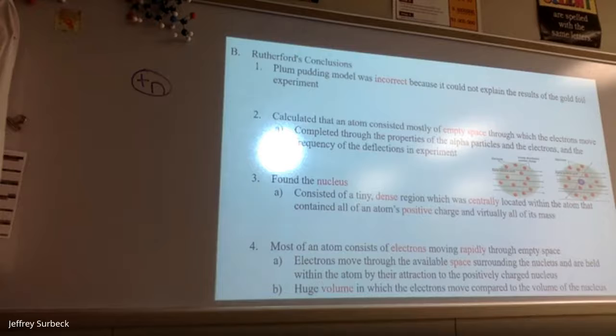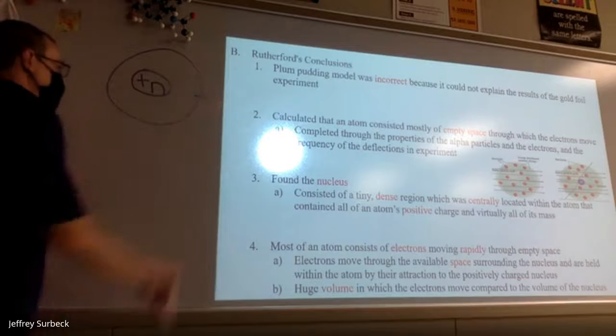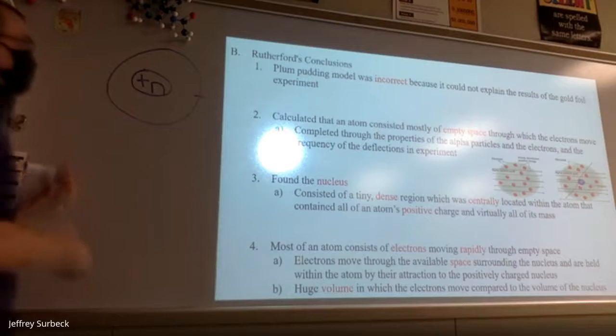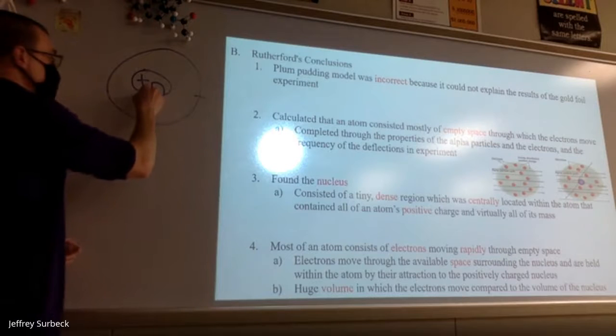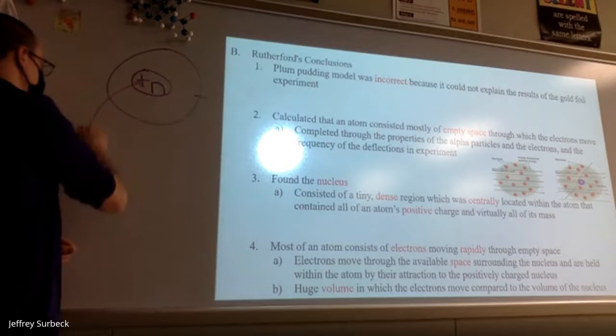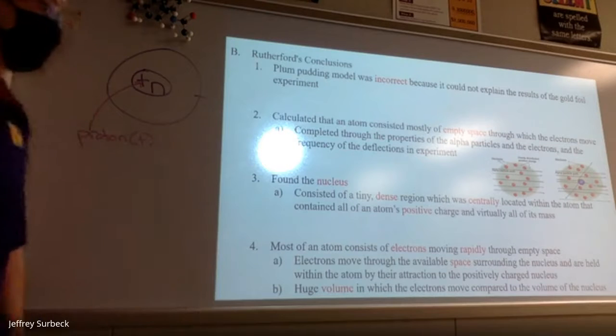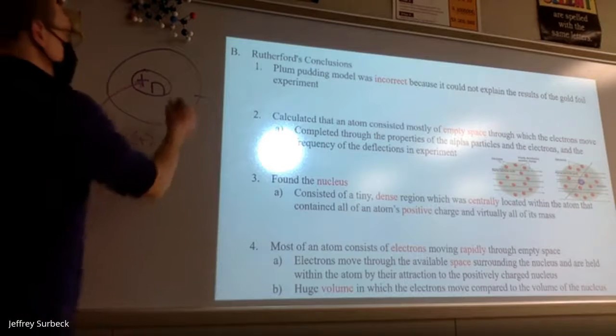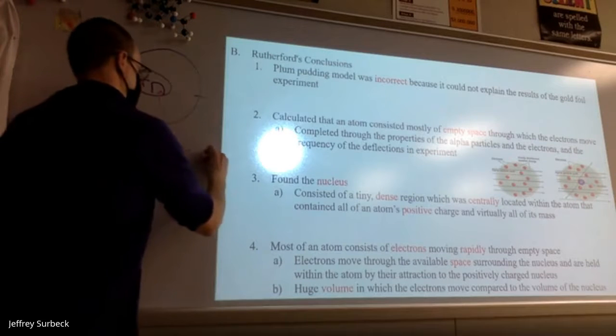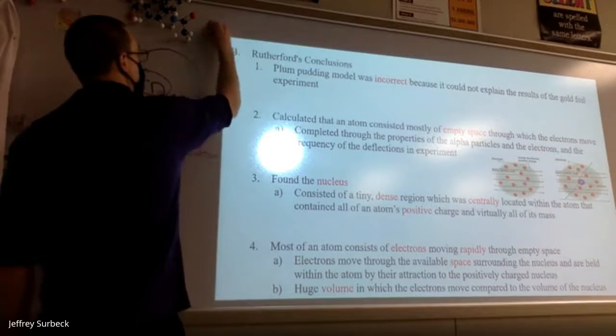So what happens here is Rutherford develops that next model of the atom where the plus sign stands for our positive proton. Our N is our neutron, which we'll get to here in a second. And then this is located in the center. And around the outside is those electrons. So again, the center, we call this the nucleus. And then within the nucleus, you have a proton, which is that positive charge. And that's what Rutherford found. He said, hey, it's all in the center. The neutron, which we'll get to here in a second, how they find that. And then on the outside, there are those electrons.